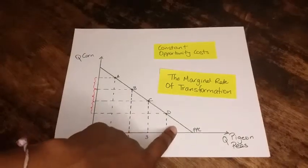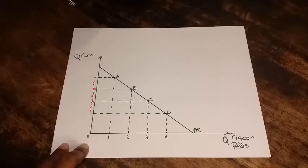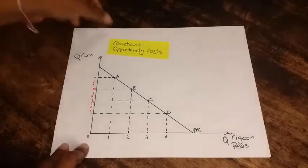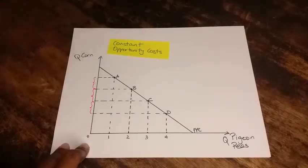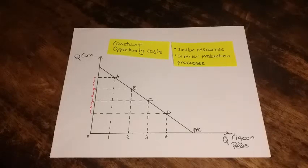Why would we have this constant opportunity cost? Well, think about it. When you're planting peas and corn, it's the same type of soil you're using, the same fertilizer, same amount of water. Pretty much we have similar types of resources and similar production processes as well, so it is easy for the resources to switch between the production of either one. So it tends to be constant.